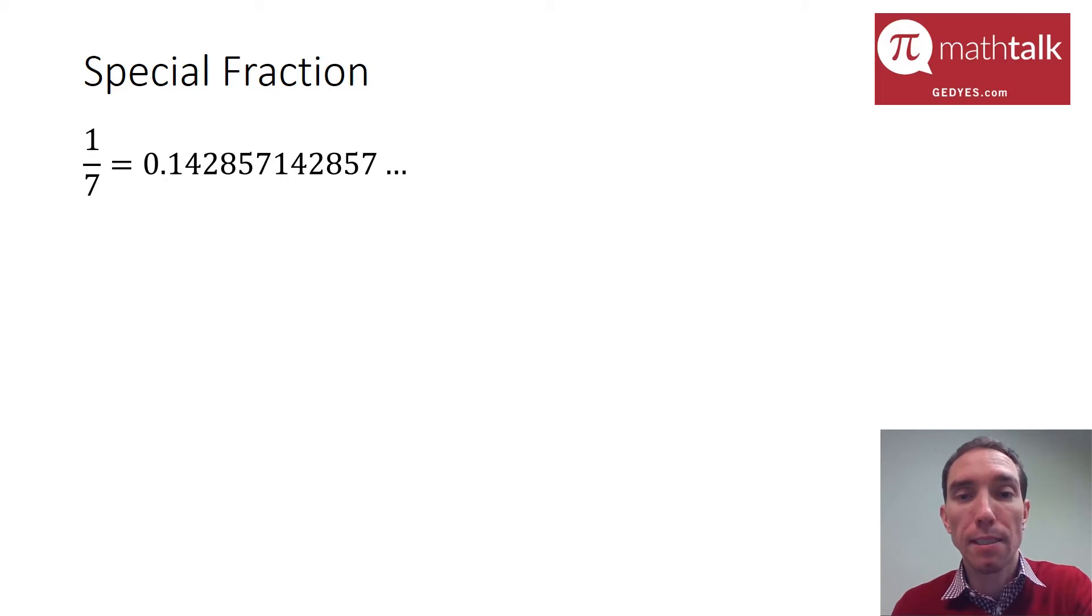Now I want to look at a special fraction—it's a pretty uncommon one, but it's got a really cool feature in my opinion on the decimal value, and that is one-seventh. One-seventh as a decimal is this really long crazy decimal: 0.142857, 142857. It's what's known as a repeating decimal because these six digits—1, 4, 2, 8, 5, 7—actually repeat forever.